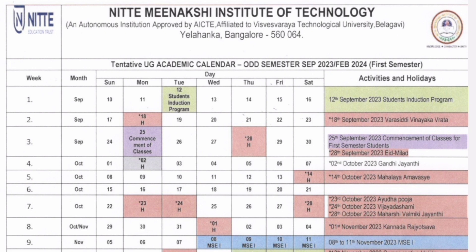In the same week, 28th September is a holiday for Eid Milat. There is also a holiday for Gayanti Jayanti. If you come to row number 9, you can see it is written MSE1, which means mid-semester exam 1. Your mid-semester exam will start from 8th November and go to 11th November — so over 4 days, your first MSE1 will be completed.